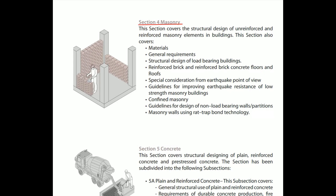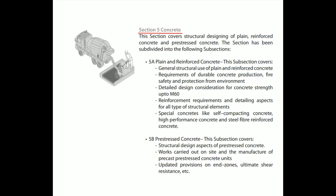Section 4 covers masonry. This section covers the structural design of unreinforced and reinforced masonry elements in buildings — including material requirements, structural design of load-bearing buildings, reinforced brick and reinforced brick concrete floors and roofs, special considerations from an earthquake point of view, guidelines for improving earthquake resistance of low-strength masonry buildings, confined masonry, guidelines for design of non-load-bearing walls and partitions, and masonry walls using rat-trap bond technology.